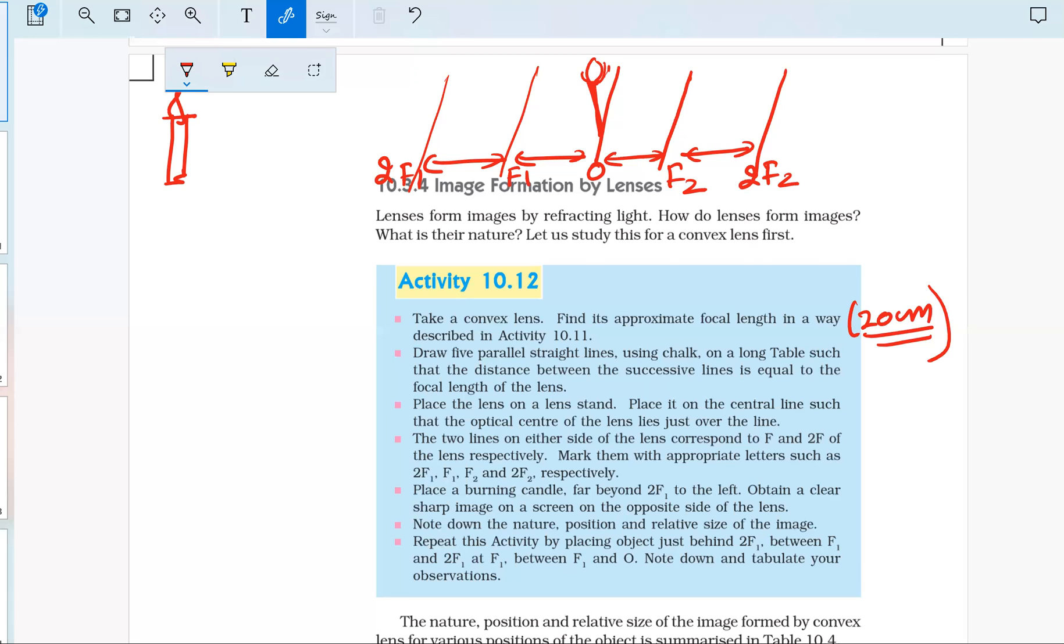This way we will obtain various positions and images. For the image, we can take one piece of cardboard or paper, and this is actually the screen. We'll place it accordingly and obtain the image on this screen.